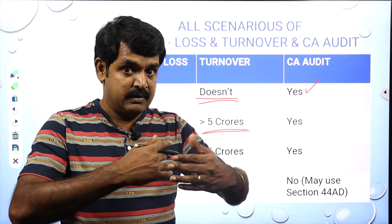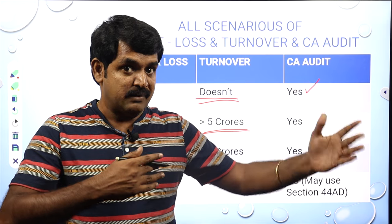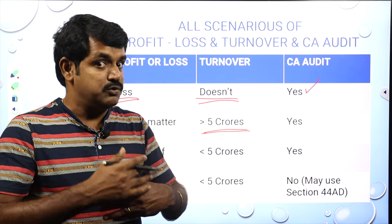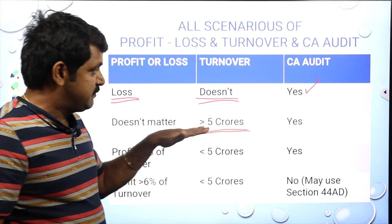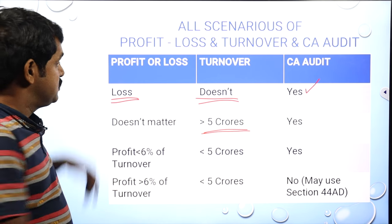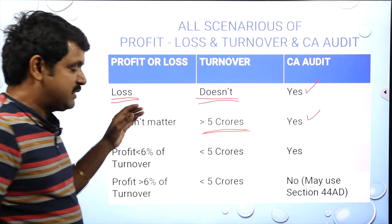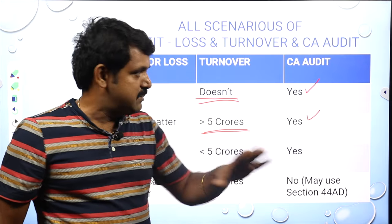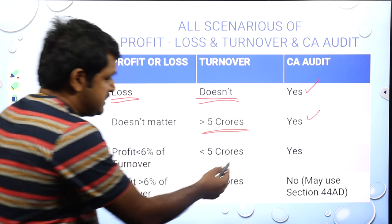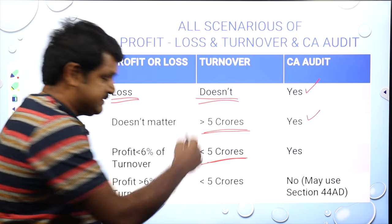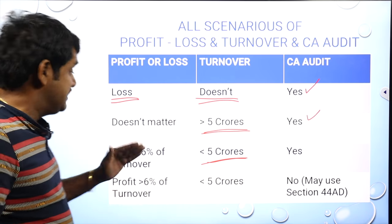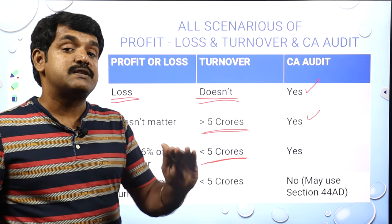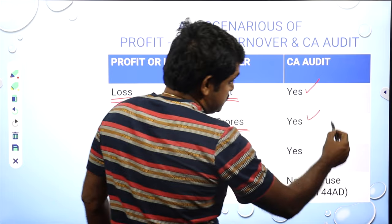If your turnover is more than five crores per year — calculated by adding your daily profit and loss from April 1st to March 31st — then you have to do a tax audit regardless of how much profit you are making. If your turnover is less than five crores, then you need to find out whether you are making the minimum profit, which is six percent of your turnover.